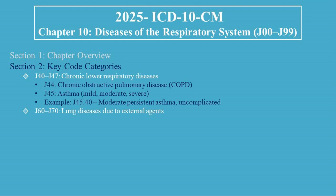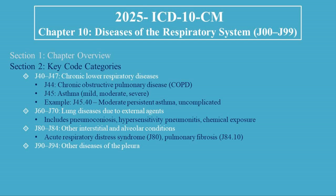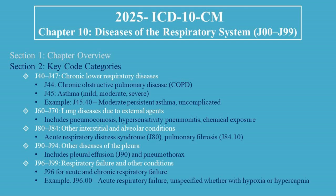J60 to J70 covers Lung Diseases due to External Agents, including Pneumoconiosis, Hypersensitivity Pneumonitis, and Chemical Exposure. J80 to J84 covers Other Interstitial and Alveolar Conditions, including Acute Respiratory Distress Syndrome (J80) and Pulmonary Fibrosis (J84.10). J90 to J94 covers Other Diseases of the Pleura, including Pleural Effusion (J90) and Pneumothorax. J96 to J99 covers Respiratory Failure: J96 for Acute and Chronic Respiratory Failure. Example: J96.00, Acute Respiratory Failure, Unspecified, whether with Hypoxia or Hypercapnia.